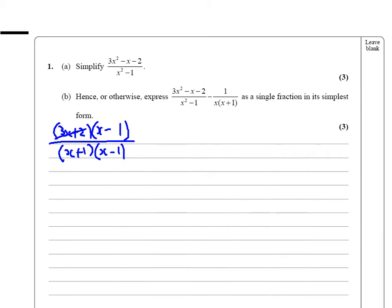And these cancel to leave the answer. Sorry, I've cancelled that completely wrong. So these common factors cancel. That one cancels with that one. So the answer is 3x plus 2 over x plus 1. Can't simplify that any further. It's cancelled down as much as possible.